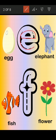Which letter is this? Letter F. F for fish, F for flower. One more time — F for fish, F for flower. And what's the sound of letter F? F. Very nice.